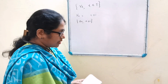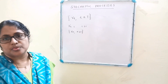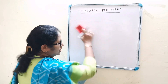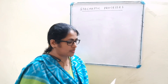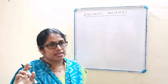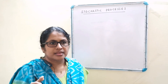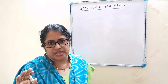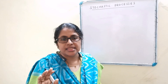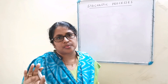Next we have to consider the classification of stochastic process. We have already discussed about S and T — S is the state space and T is the parameter space. Depending on the values of S and T, we have four types of stochastic processes.